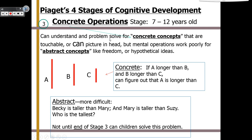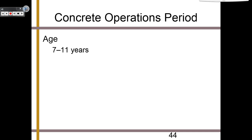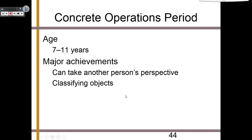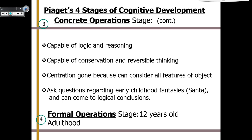The concrete operational period is from 7 to 11 or 12 years old. Major achievements include being able to take another person's perspective, learning to classify objects, conservation and other reversible mental operations, capability of logic and reasoning, centration is gone because they can consider all features of an object, and they begin to ask questions regarding those early childhood fantasies like Santa and can come to logical conclusions.